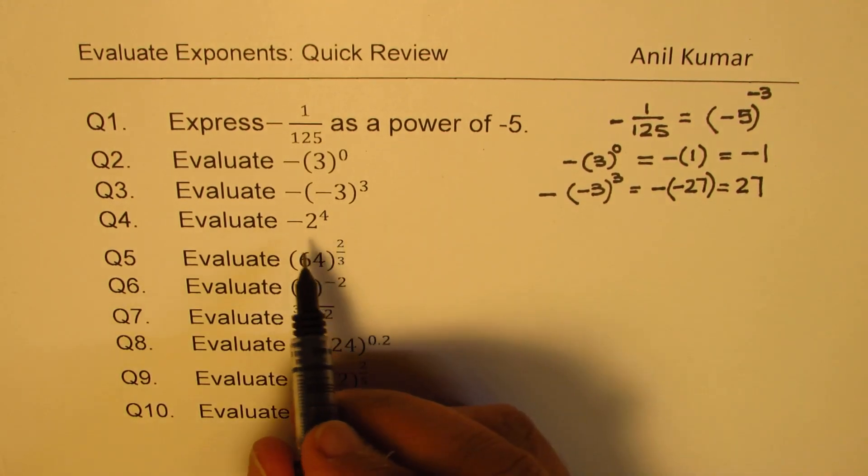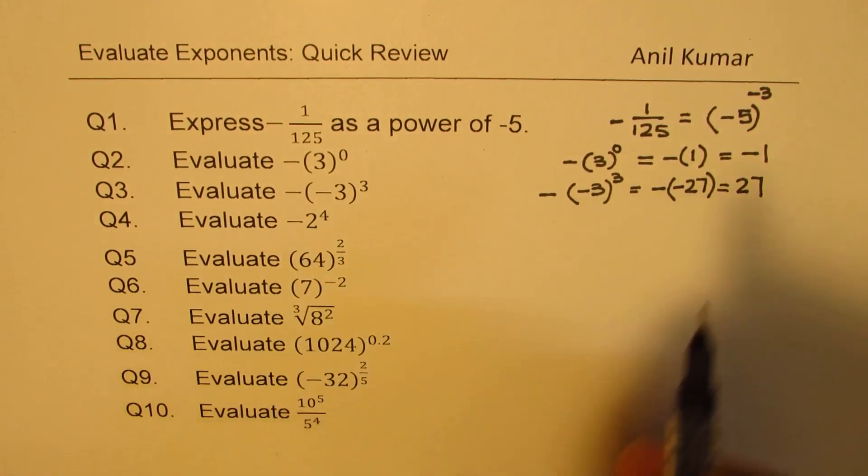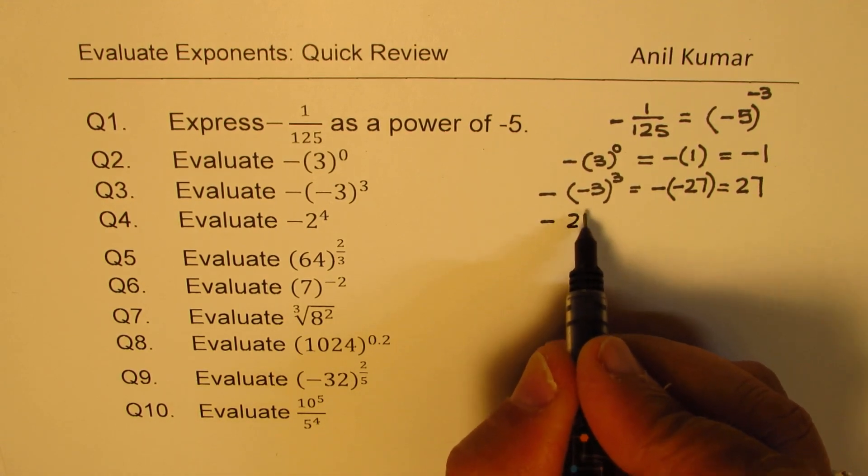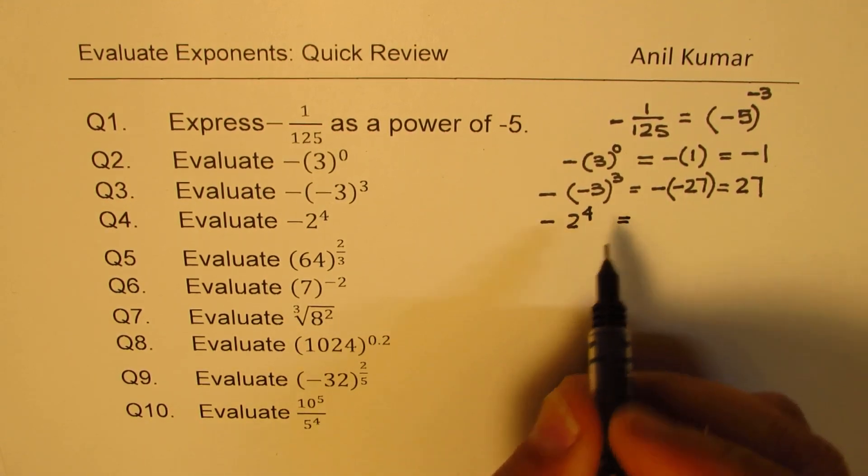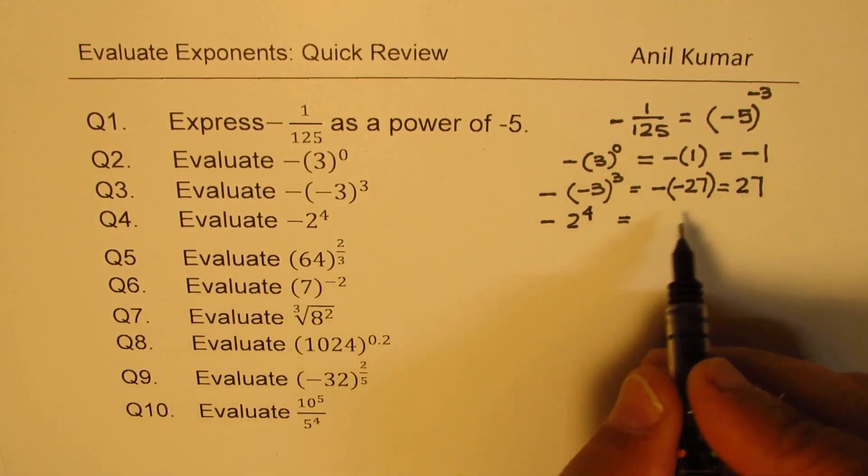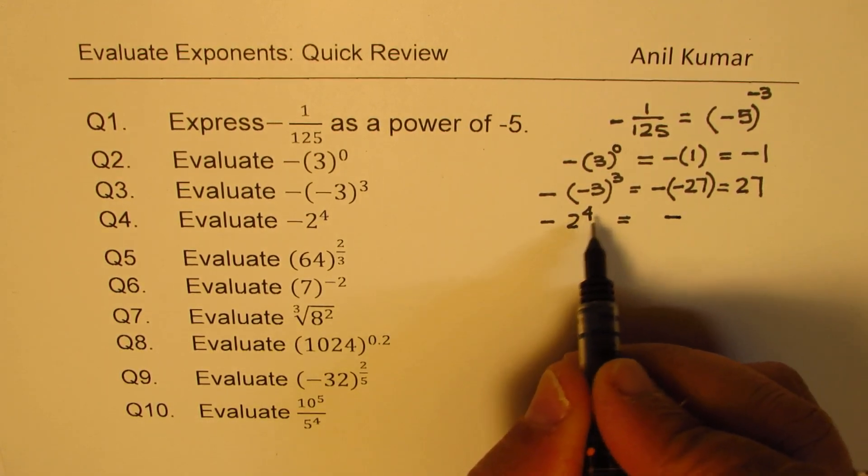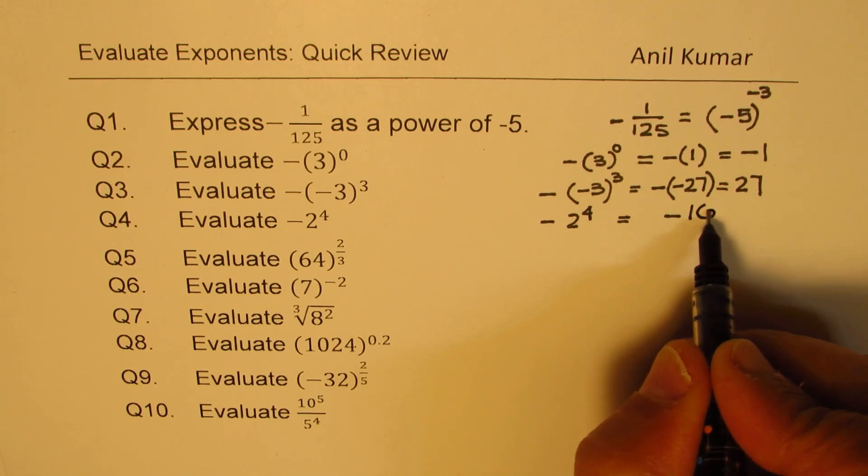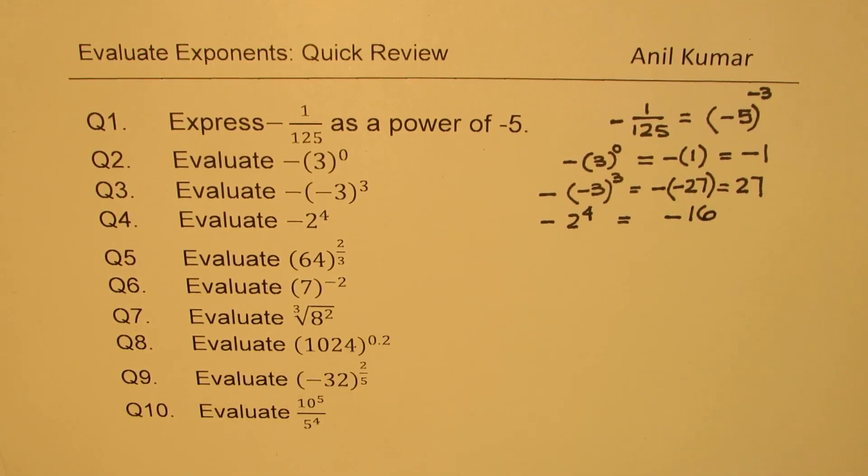The next question here is to evaluate minus 2 to the power of 4. So when we have minus 2 to the power of 4, it is only 2 which is to the power of 4, not this negative. So the negative remains, and 2 to the power of 4 is 16. So we get minus 16 as our answer.